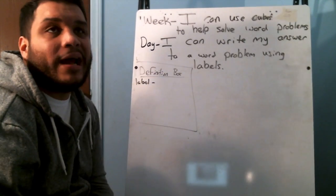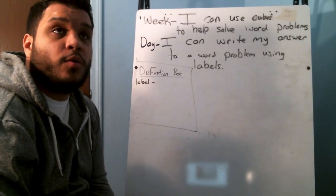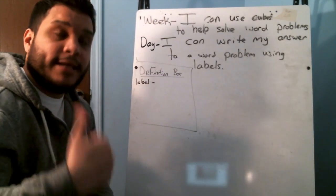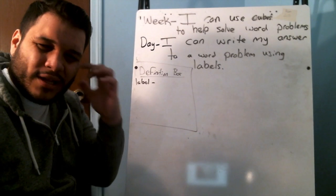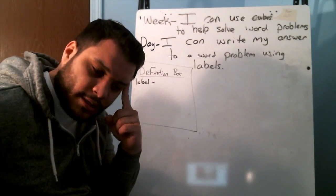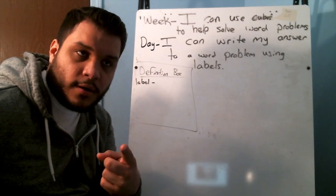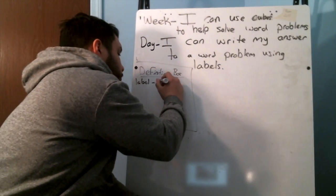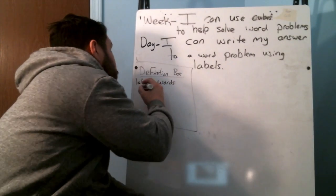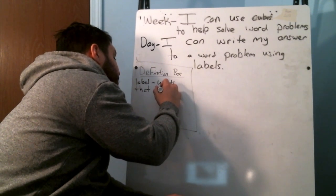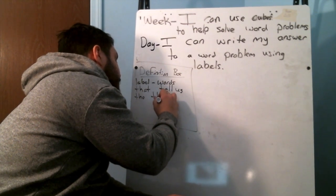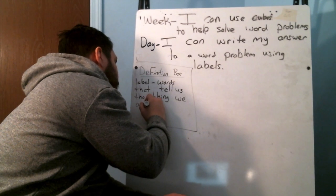When we spoke about the dogs that were playing catch, we labeled our answer with '20 dogs.' When we spoke about our cats, we labeled our answer '17 cats.' So the label — what does it do? It tells us what we're talking about in the question. So how would I define the word 'label'? Well, is a label a number? No, it's words. Words that tell us the thing we are talking about.